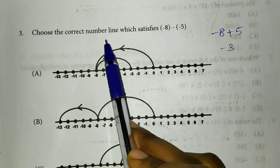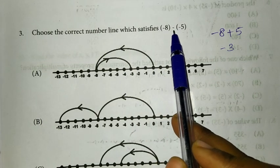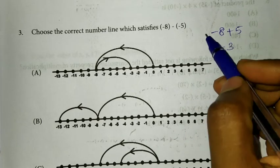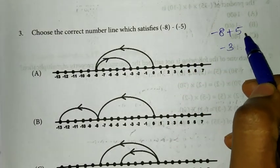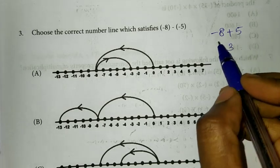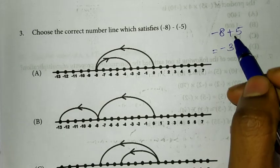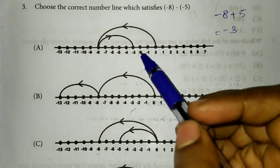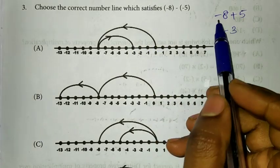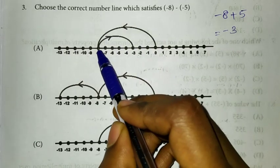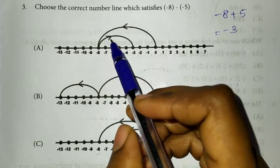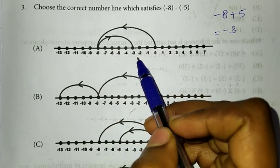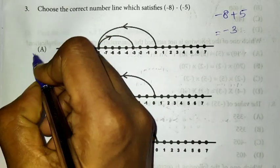Third question: choose the correct number line which satisfies minus 8 minus of minus 5. Minus into minus gives plus 5. While adding minus 8 and plus 5, we get minus 3 as the answer. Check which number line gives minus 3. Mark minus 8 first — 0 to minus 8 — then put 5 units forward. We get minus 3. So option A is correct.